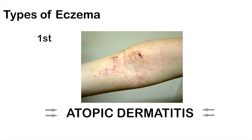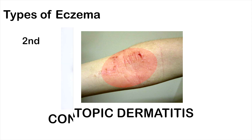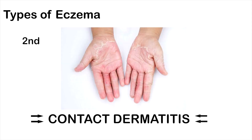Eczema is classified into several types. First is atopic dermatitis, which is characterized by rashes typically appearing on the arms and behind the knees. The second type of eczema is contact dermatitis, when the eruption on the skin is due to contact with certain substances.